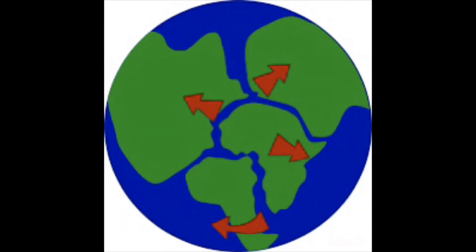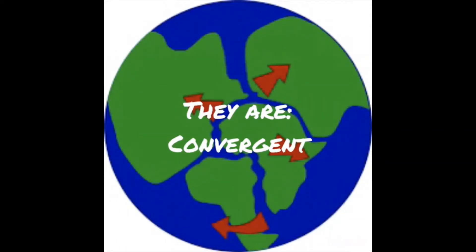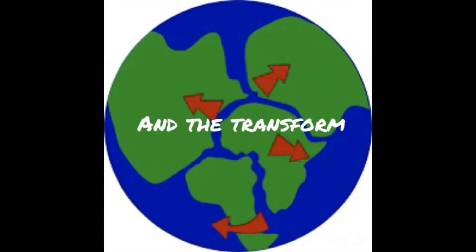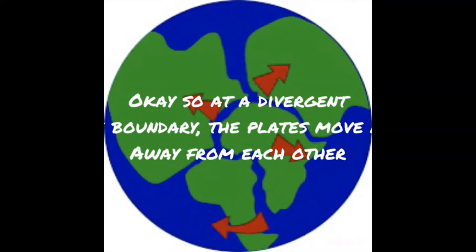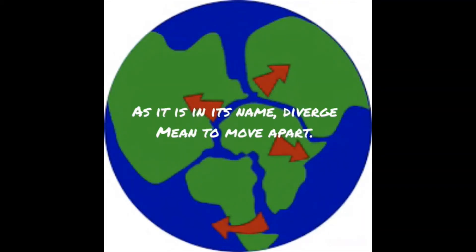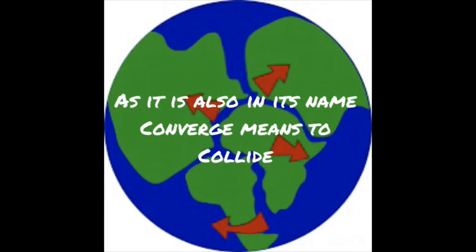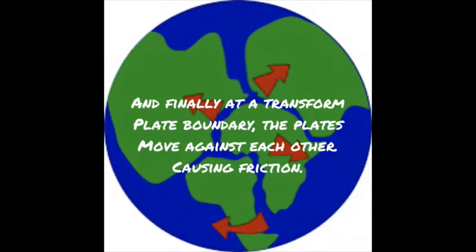There are three types of plate margins: convergent, divergent, and transform. At a divergent plate boundary, the plates move away from each other — diverge meaning to move apart. At a convergent plate boundary, the plates move towards each other — converge meaning to collide. And finally, at a transform plate boundary, the plates move against each other, causing friction.